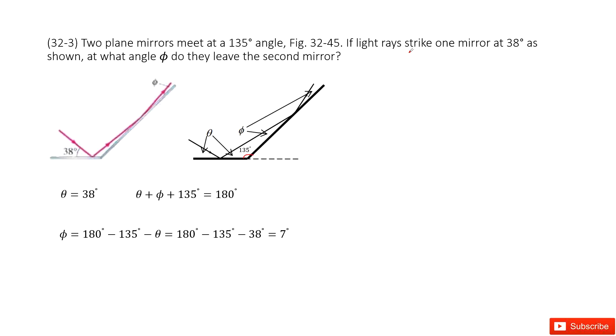If a light ray strikes one mirror at 38 degrees, so theta we can see is 38. And then it asks you what angle phi do they leave the second mirror?